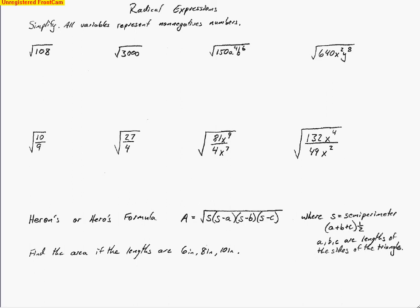Today we are going to learn how to simplify radical expressions. The directions say to simplify, but they also give this extra explanation: all variables represent non-negative numbers.